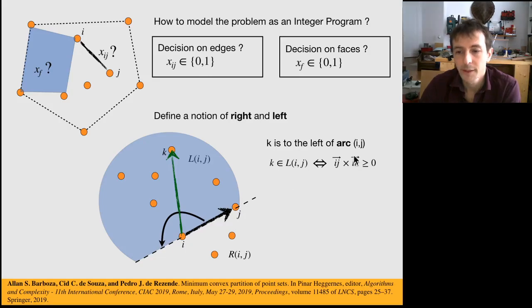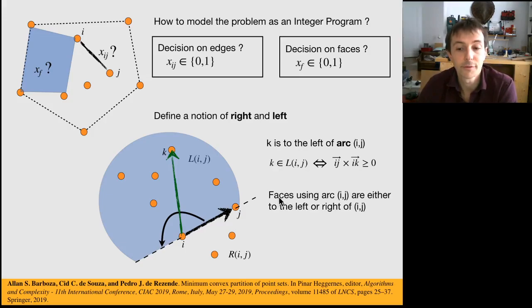And typically k is on the left side of ij, of arc ij, if the cross product of ij and ik is positive. So depending on the sign of the cross product, you will be on the left or the right.